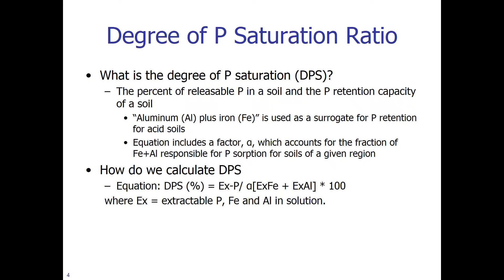In many cases we use aluminum plus iron as a surrogate for P retention in acid soils. The degree of P saturation equation includes an alpha factor which accounts for the fraction of iron and aluminum responsible for P sorption for soils of a given region. DPS is simply the ratio of extractable P divided by extractable iron and aluminum, with an alpha factor in the denominator, multiplied by 100 to convert to a percentage. DPS represents extractable P, iron, and aluminum in solution.